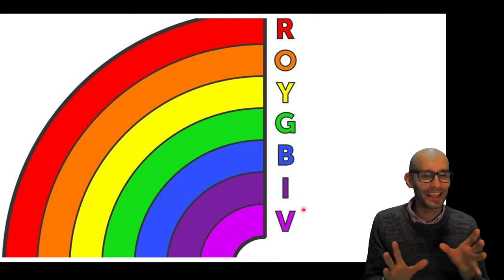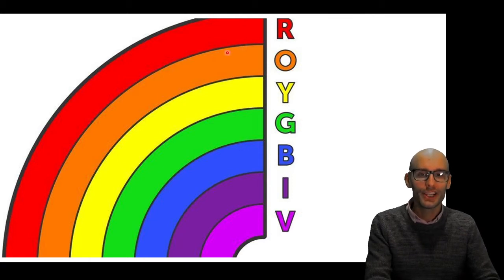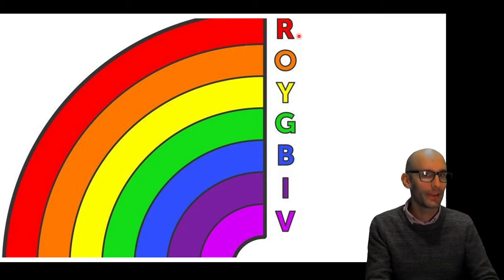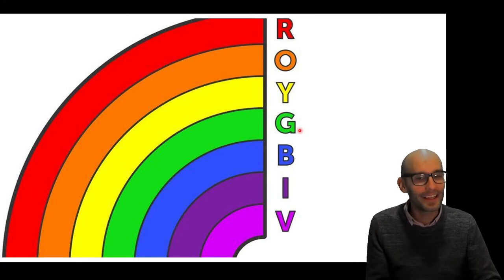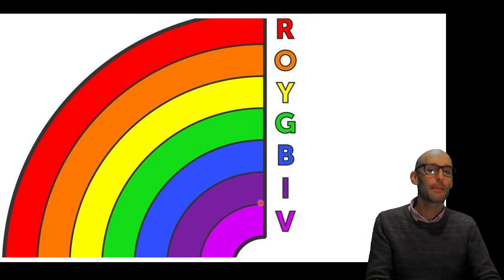Now, when you actually think about that, you start to realize that it's a little bit weird. Orange is halfway in between yellow and red. Green is halfway in between yellow and blue. The next thing that you do is you mix blue and red together, and you get purple.